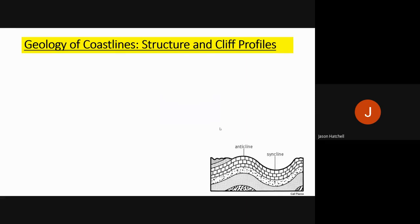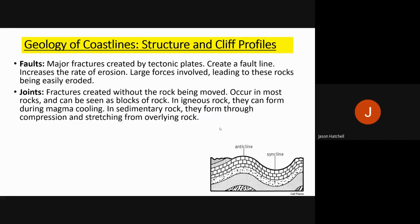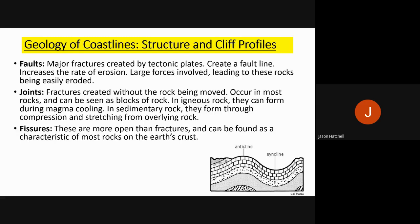There are some very important A-level things to remember when looking at the actual structure of rocks at a coastline. Rocks can have faults — these are major fractures caused by tectonic plates creating a fault line, involving large earth forces, which leads to those rocks being easily eroded. We also have joints, which are cracks or fractures in the rock without the rock having been moved; these happen in most rocks and can be seen in blocks. We also have fissures, which are more open than fractures — quite wide, gaping holes in rocks found on most rocks of the earth's crust.